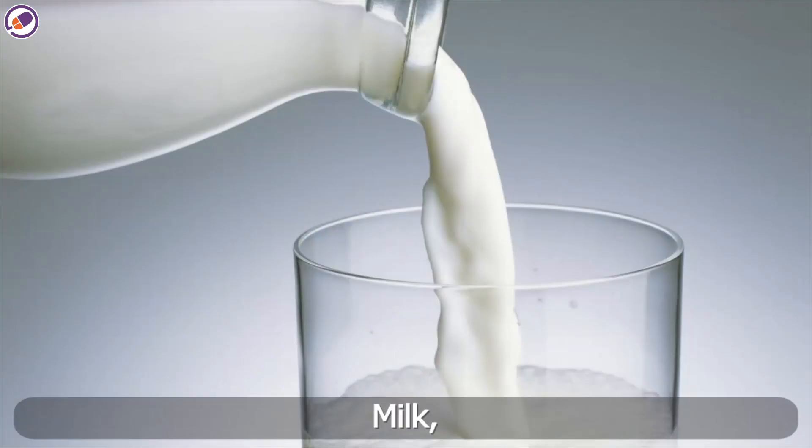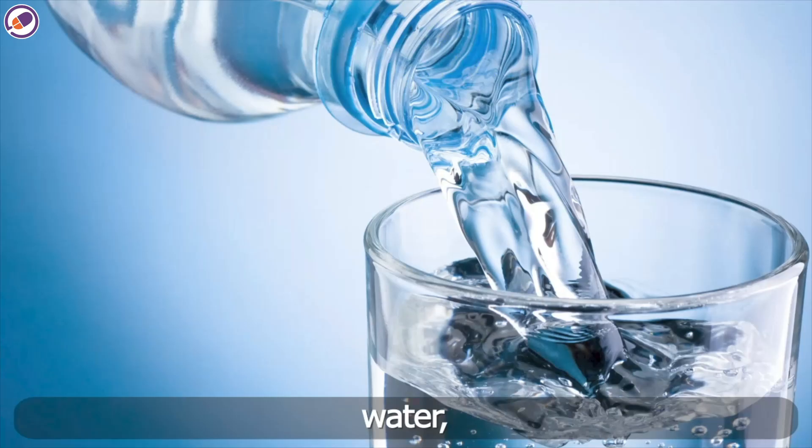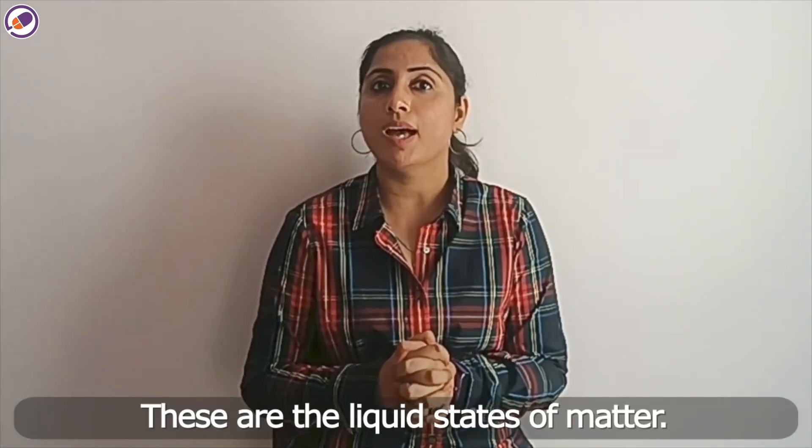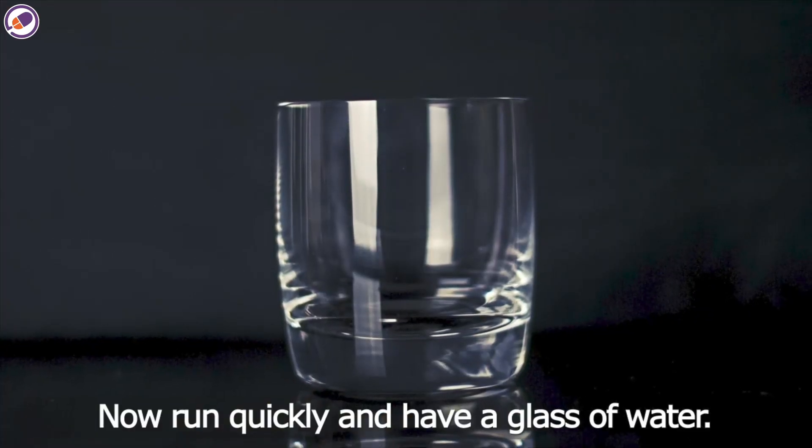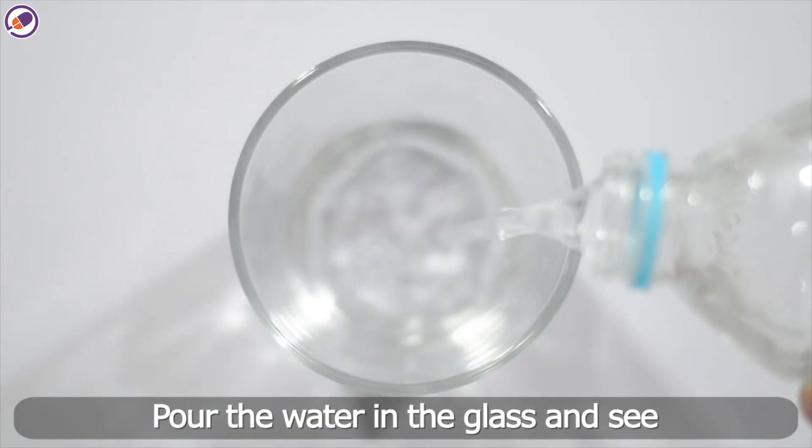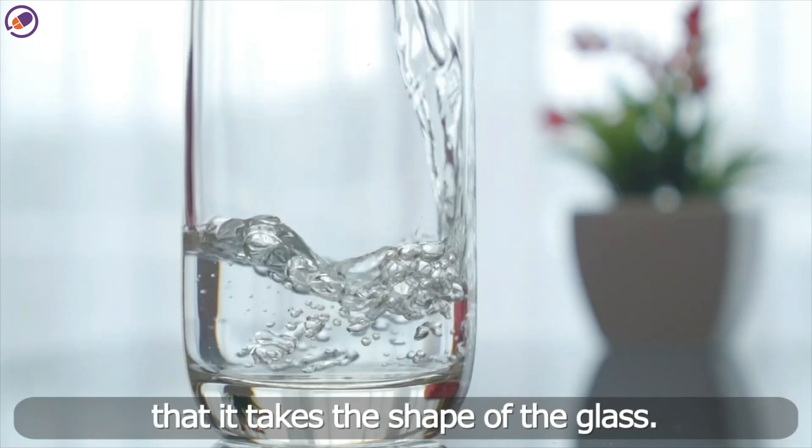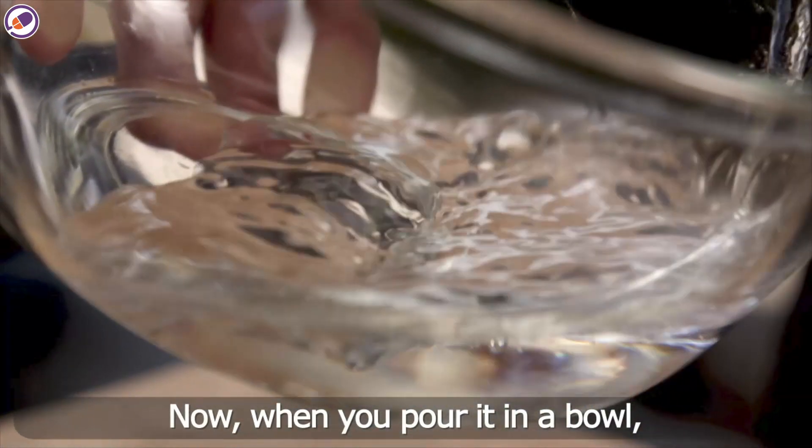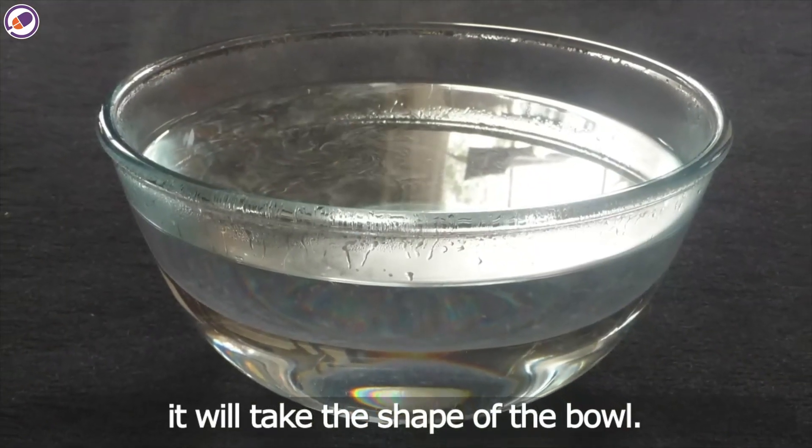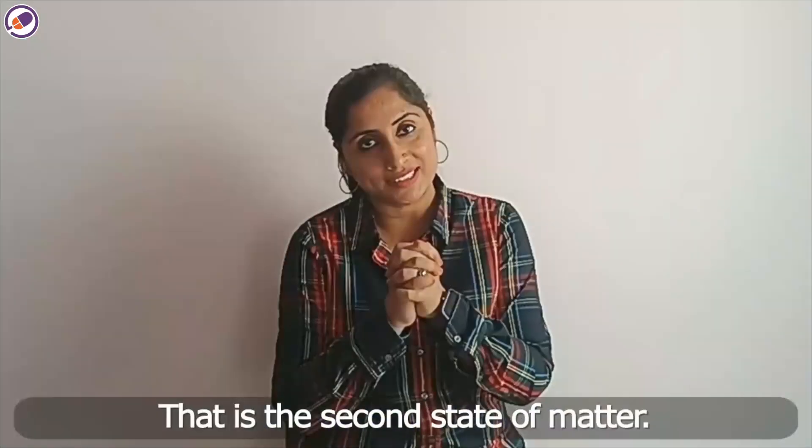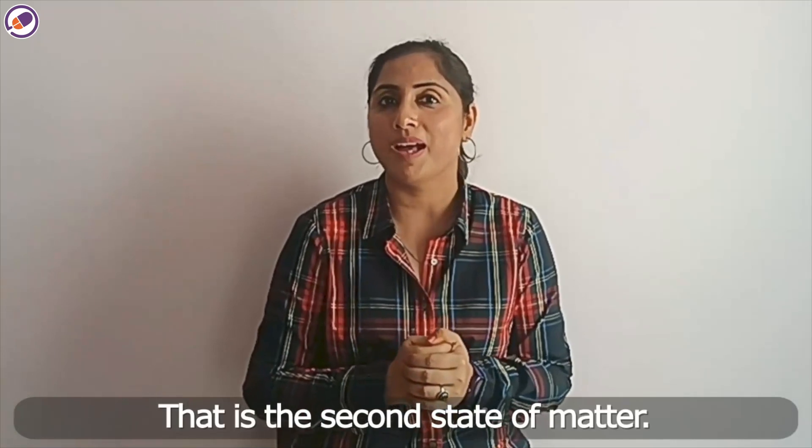So liquid is the second state. Milk, oil, water, these are the liquid states of matter. Now run quickly and have a glass of water. Pour the water in the glass and see that it takes the shape of the glass. Now when you pour it in a bowl, it will take the shape of the bowl. So that's about liquid, that is the second state of matter.